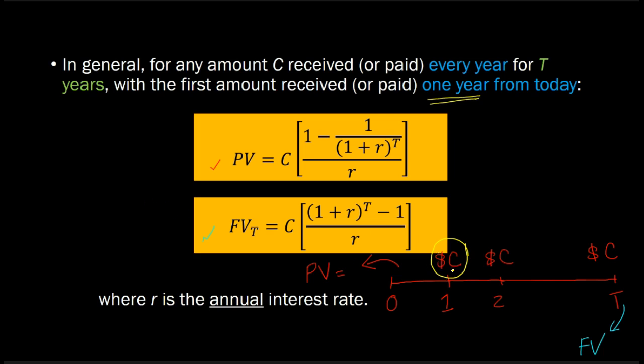In fact, whenever we have annuities in which the first cash flow is occurring one year from today, or in the next time period, so it's not today, it's one year from today, or one time period from today, we call these annuities ordinary annuities. So this is an example of an ordinary annuity.